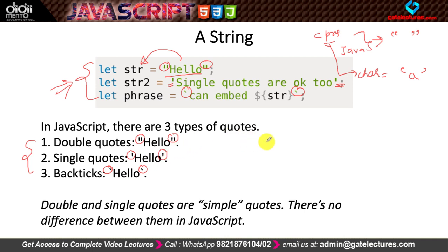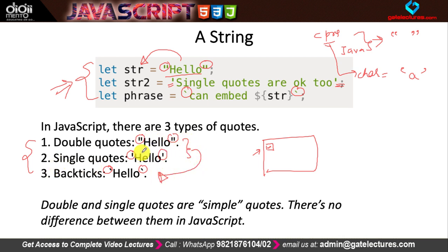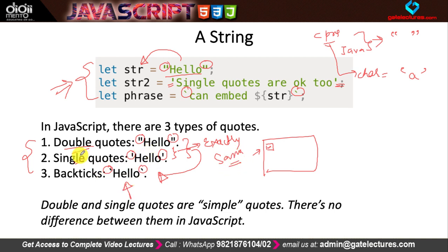On your keyboard, on the top-left corner with the tilde sign, there is also a back tick. Double inverted commas and single inverted commas both behave exactly the same — for example, "hello" and 'hello' are identical, there is no difference between them. But the back tick has a small difference.